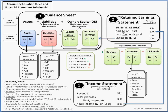Starting at the top, we have the basic accounting equation, where assets equal liabilities plus owner's equity. Moving down into the expanded equation — since we've got a corporation here — owner's equity is broken down into capital stock and retained earnings. So we have assets equal liabilities plus capital stock plus retained earnings.